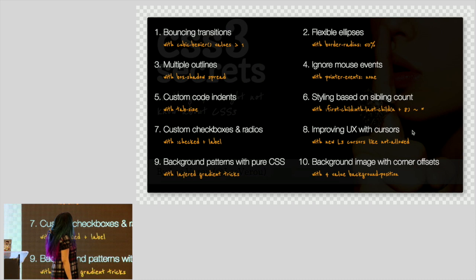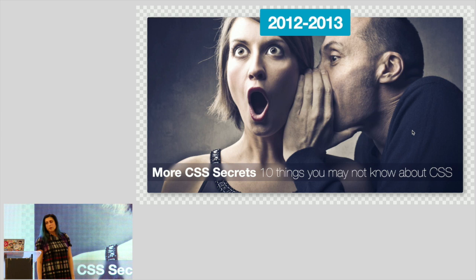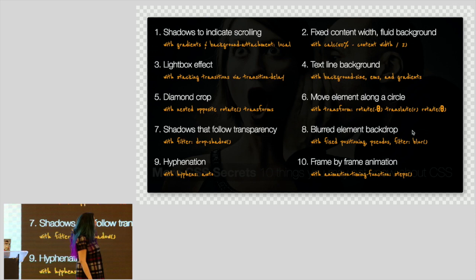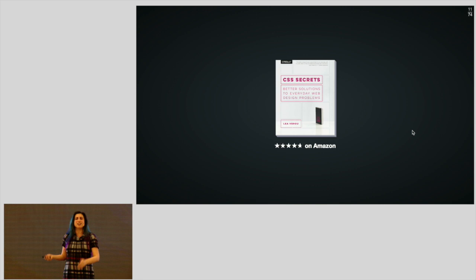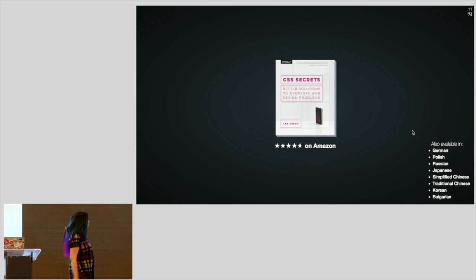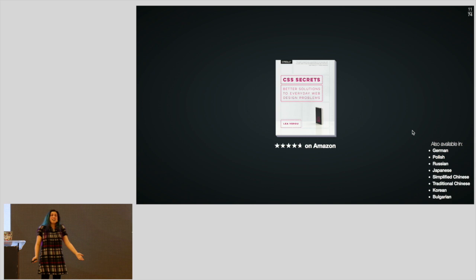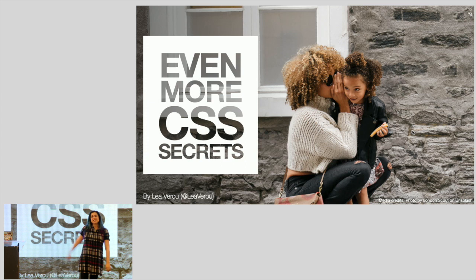Then I did a sequel called More CSS Secrets — ten things you may not know about CSS — another ten things I considered cool at the time. Then I combined those with a few more and wrote a book: 47 things you may not know about CSS. It was translated into a bunch of languages, sadly not Spanish or Greek, which made me very sad. Today I want to do a third sequel: Even More CSS Secrets — another ten things I want to share that I think are cool about CSS.